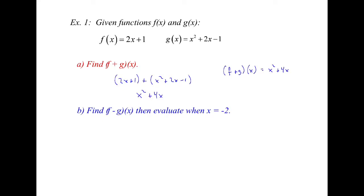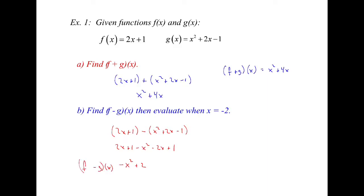On part b, find f minus g of x. So we'll do the same thing — it'll be 2x plus 1, but now we will subtract. Do pay attention to the order that f and g come in. Because you are subtracting a quantity, everything inside gets subtracted. So we get negative x squared, the 2x's cancel, and then you have plus 2. So f minus g of x is equal to negative x squared plus 2.